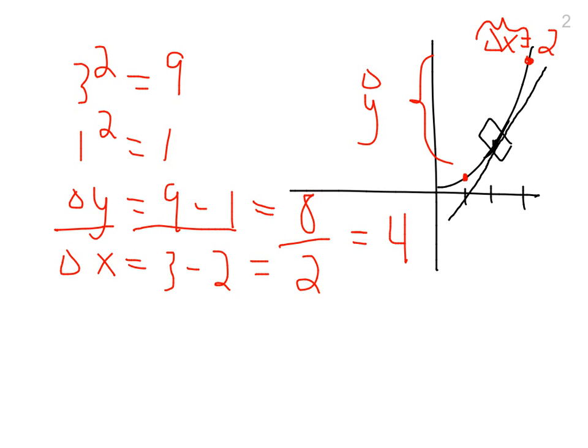So you might say well the slope here is approximately 4, because if we go 1 unit to the right and 1 unit to the left, average it out, we would get a slope of 4. Another way to think about it would be maybe instead of doing 3 and 1, you could just do 3 and 2, or you could just do 1 and 2.